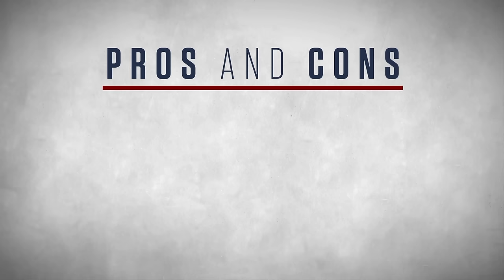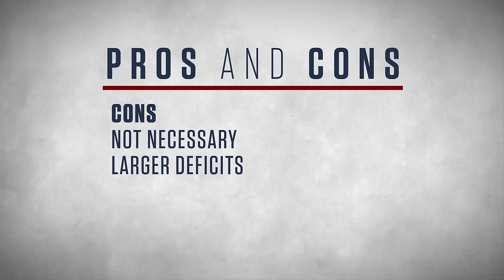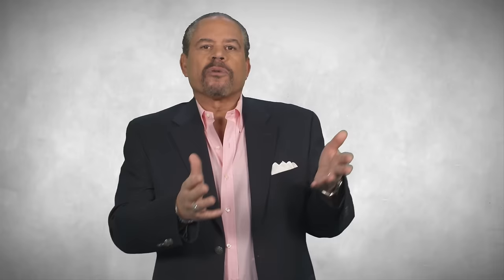Critics argue that based on a normal economic cycle, the economy would have recovered from the recession on its own without Reaganomics. Critics also point out that Reaganomics led to larger, not smaller, budget deficits and a larger national debt. Many people say Reagan giving corporate tax cuts while cutting funding for domestic social programs was a policy that favored the rich and led to increased wealth inequality.